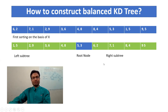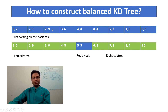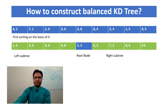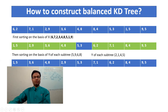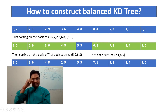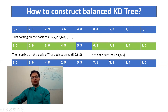Now for the left subtree, you do the same thing — sort again, but this time on the basis of y. For the left subtree we had nodes one-five, two-nine, three-six, four-eight. Looking at only the y values: five, nine, six, eight — sorting those gives us y values one, two, four, five, so the sorted order is one-five, two-nine, three-six, four-eight.